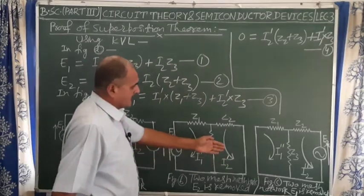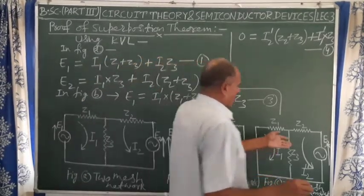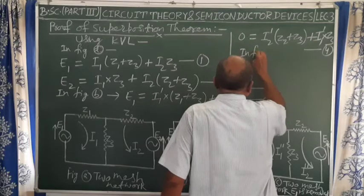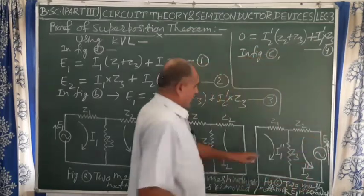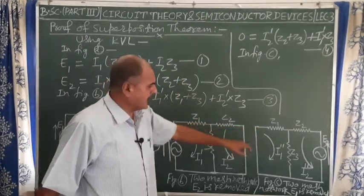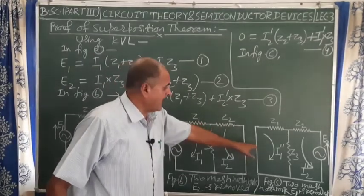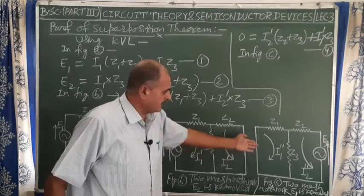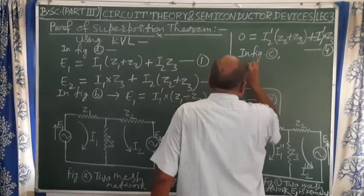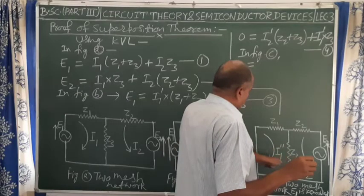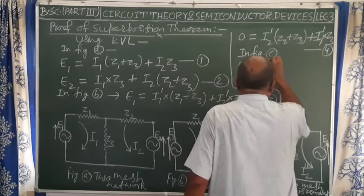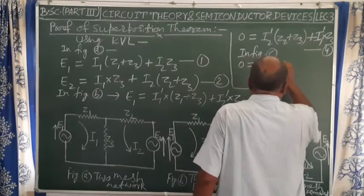Now applying Kirchhoff's Voltage Rule in figure C, where generator e1 has been removed. In the left loop of figure C, the EMF is zero, so applying KVL: 0 = i1-double-dash·(z1 + z3) + i2-double-dash·z3. This is equation number 5.